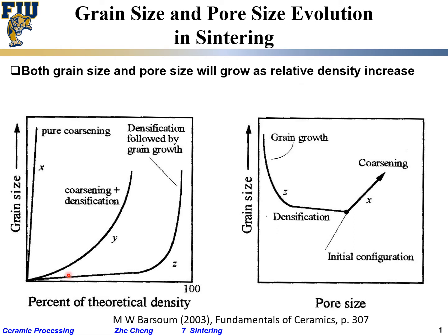Looking at the plot on the left, we are plotting grain size versus relative density. We don't start from zero — we start from around 50 percent or so. The first paradigm is pure coarsening: we have a very linear increase in grain size while achieving very little increase in density. The particles are just getting larger, the interstitial space gets closer, but there is no elimination of porosity.